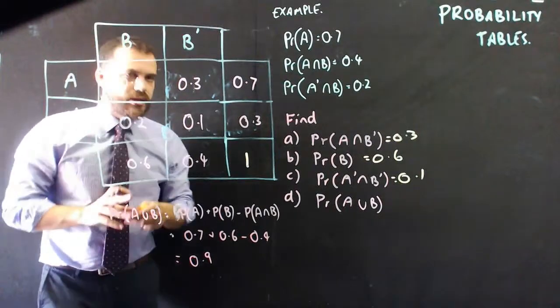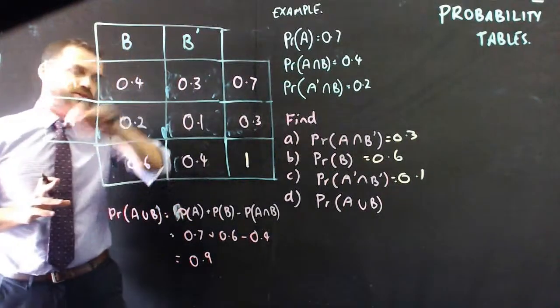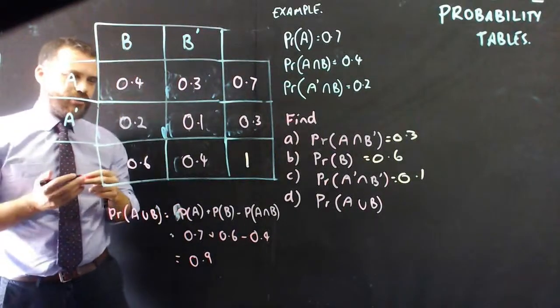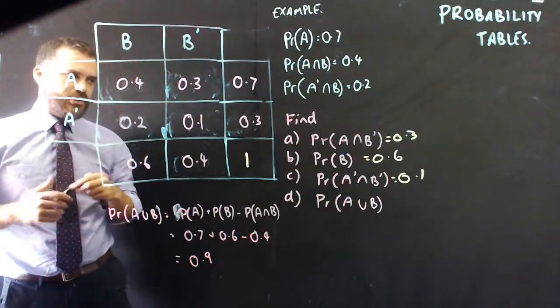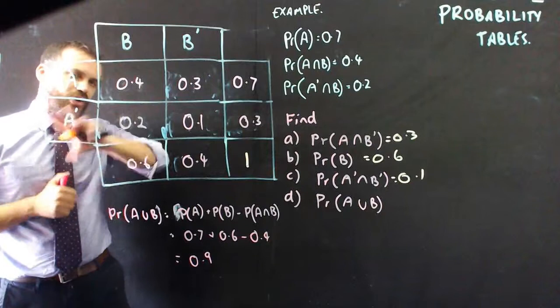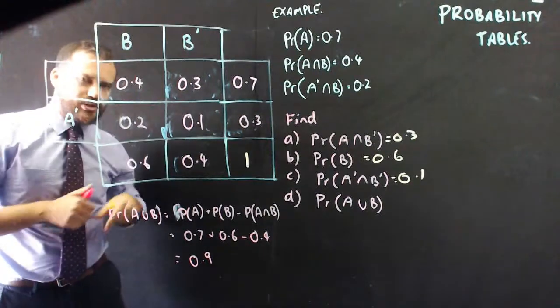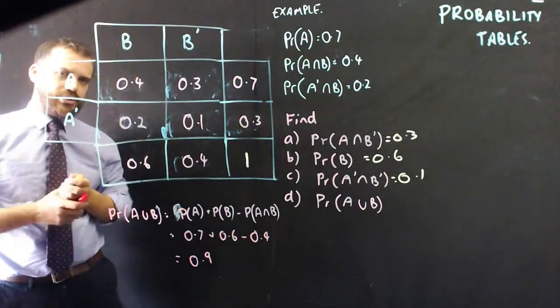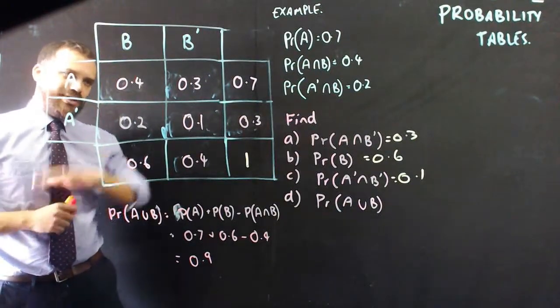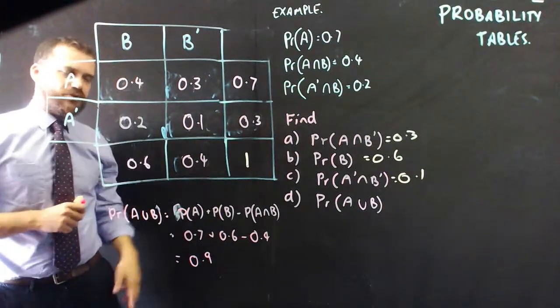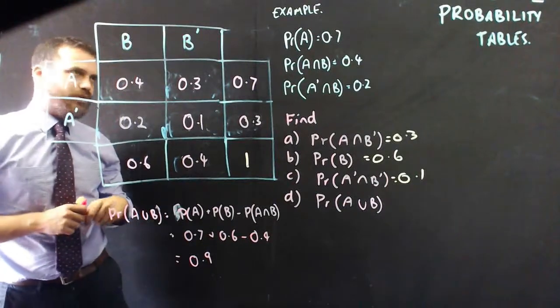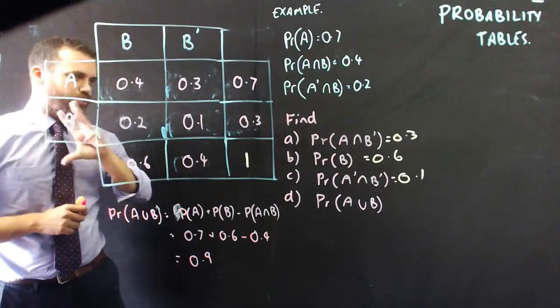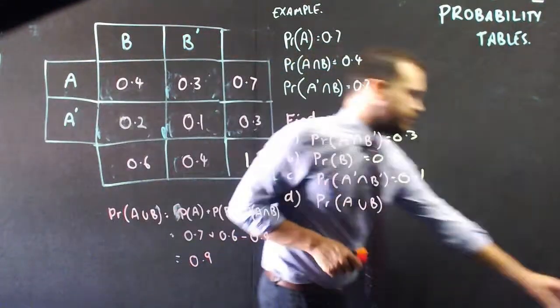That's it. This is just another way of doing things — you'll often find probability tables much easier than using a Venn diagram. If you tried to do this question with a Venn diagram, you'd definitely tie yourself in knots. Probability tables.